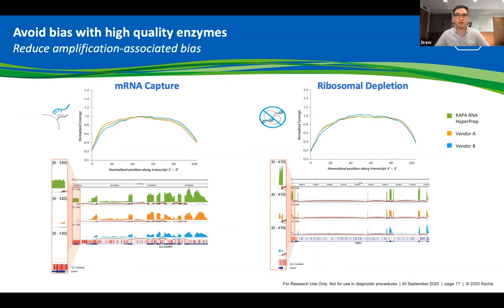Efficient amplification of GC and AT-rich fragments across the transcriptome provides the ability to have better 5' to 3' coverage, as shown in the top graphs. With the improved engineering of our preparation enzymes, it allows for better coverage of difficult regions as well, displayed in the genomic coordinate graphs on the bottom. You can see that KAPA RNA Hyper in both the mRNA capture and ribosomal depletion workflows captures more than the competitors shown here.